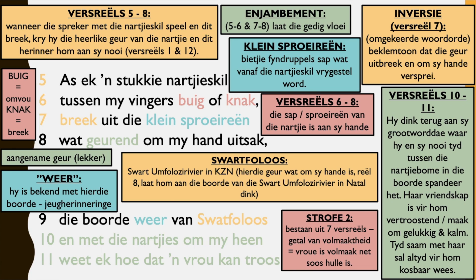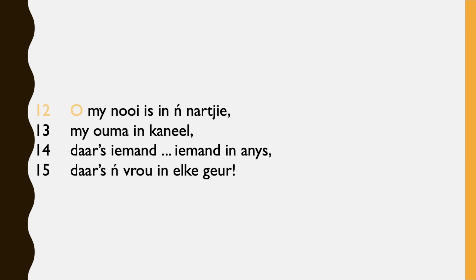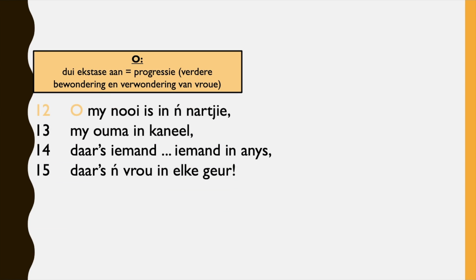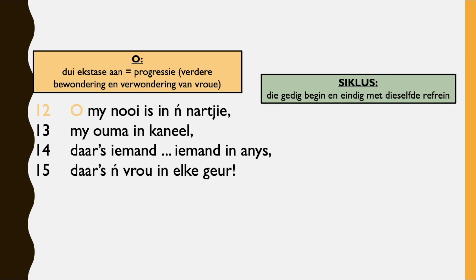And then stanza two actually consists of seven lines. This seven is apparently like the number of something being whole, something being perfect. And this indicates admiration and amazement of women. Progressie — verdere bewondering en verwondering van vroue. So there's progression because there's more of this love for women in this stanza, although it's repetition and starts with 'oe' — like, oh wow, it's a good exclamation. And then it's like the poem has a cycle because it starts and ends with the same chorus, which also means it will continue going, adding to the idea that the speaker would keep on admiring women.